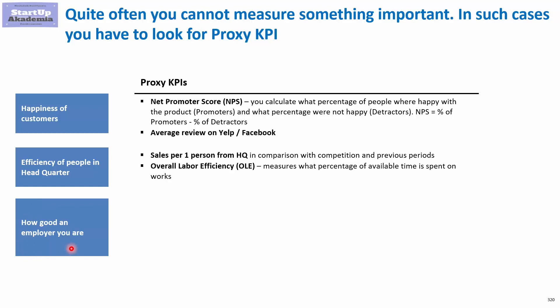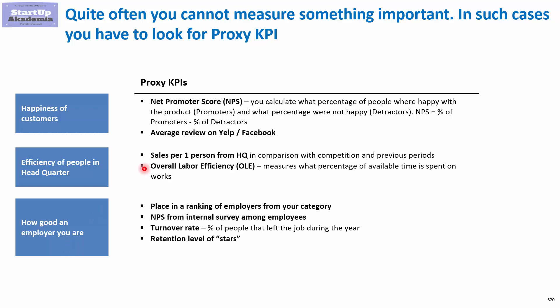The third example is pretty straightforward: you would most likely like to know how good an employer you are. Obviously you don't measure it directly, so you have to come up with some proxy estimations. Here we could devise plenty of KPIs — one of them could be a place in the ranking of employers from your category. You can also look at the NPS from an internal survey among employees.